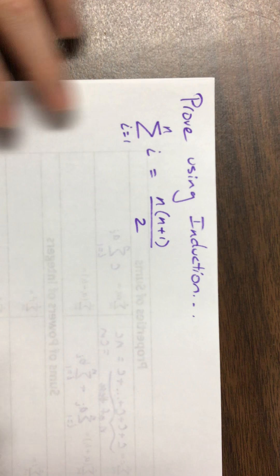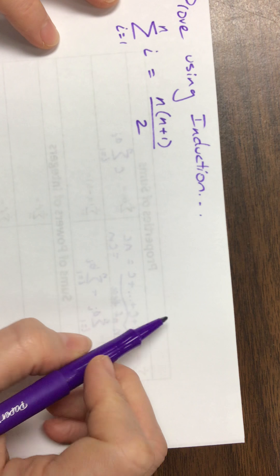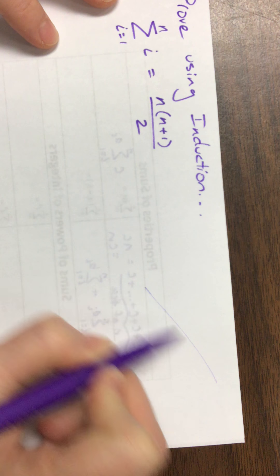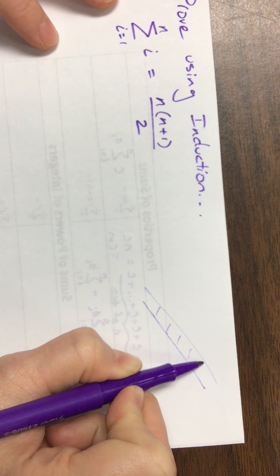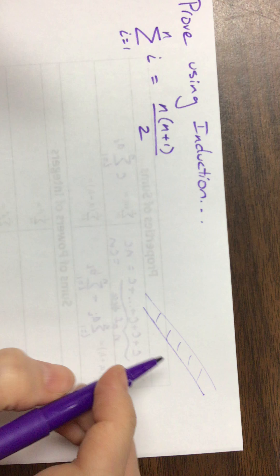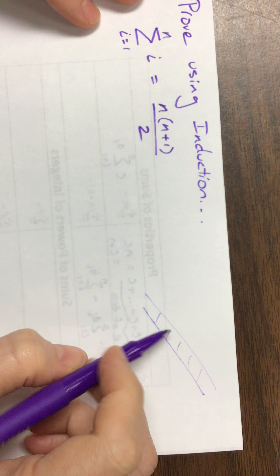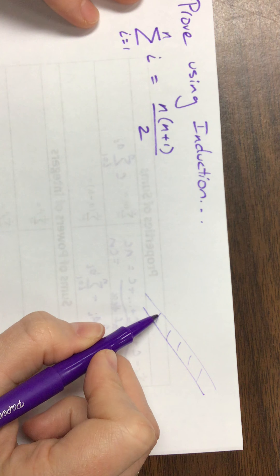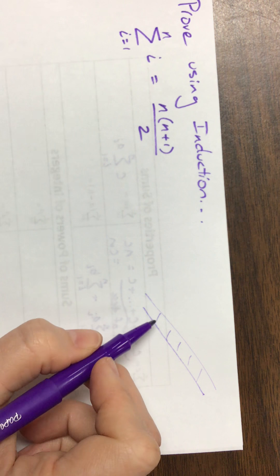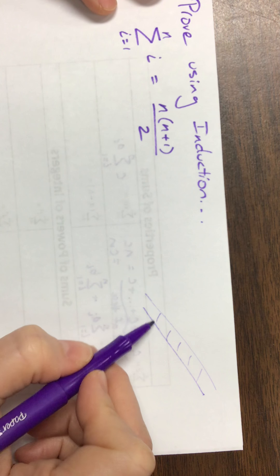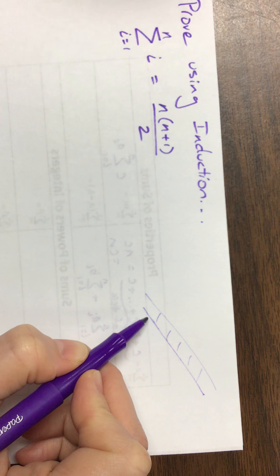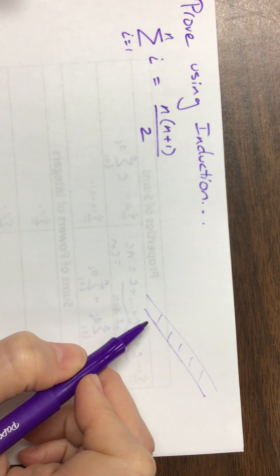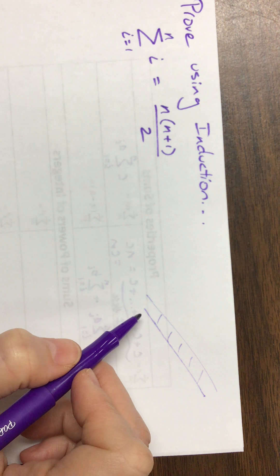So first thing, proof by induction is a little bit like climbing a ladder. The idea being, that's my ladder, there's a reason I don't teach you art. The idea is that step one, you have to show that you can actually get your foot on the ladder. If I can get to the first, if I can actually get my foot on that first step. Well, if I can't even get my foot on that first step, the whole ladder is useless, right?